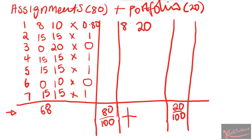From these marks, these are your class marks from the assignments — you have 68. This is your class mark. But you want your final mark. Your class mark is 68. Let's say you don't perform well on your portfolio and you get 40%. So 40 divided by 100 is 0.4. Let's say you get 40 over 100 for your portfolio.